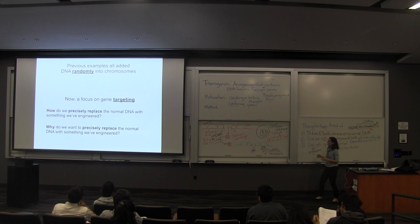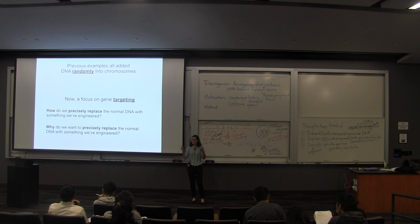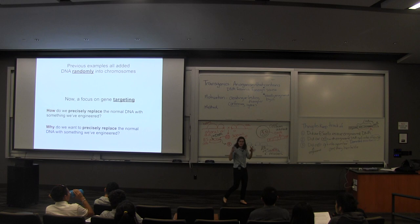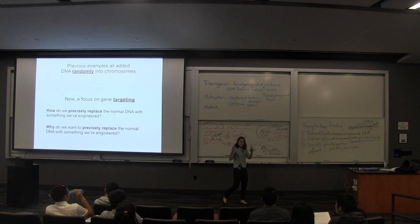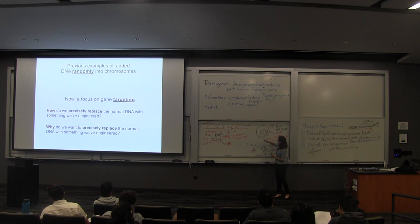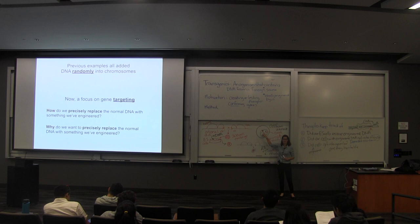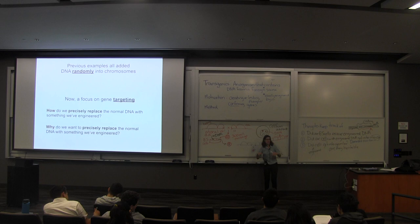Everything I talked about before involves DNA randomly integrating. The comment that was raised was: does it go into the same place as the original gene? So we're going to move into how it's sometimes useful to not just add DNA someplace else, but instead replace it. That takes a little bit of extra work. We're going to learn how to replace a gene rather than just adding DNA. Adding DNA is the first step — a lot of the replacing is going to be the same, but with a couple of added bits.